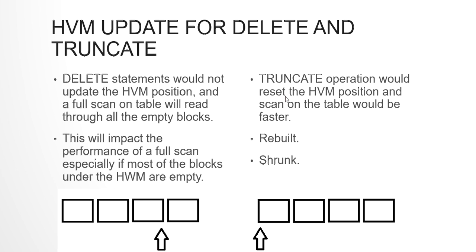Instead, if you truncate the table, the HWM would move and reset to the zeroth position. The other two ways of resetting the HWM are either rebuilding or shrinking the table.